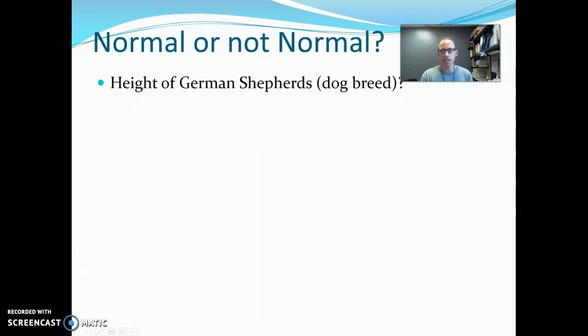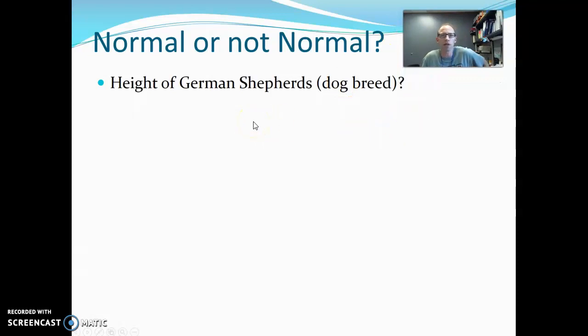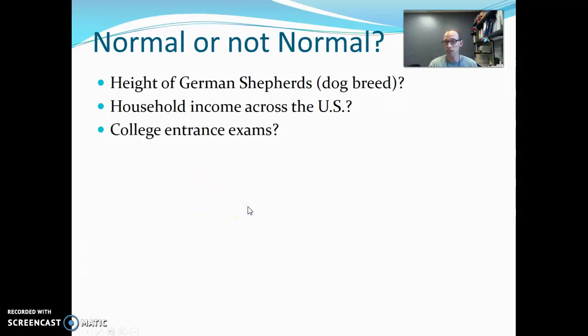Here's some various things. Let's try them out. What about dogs? Let's say you take a particular dog breed and then you measure the height and put them all in a histogram. Are those going to be normally distributed? Or what about household income? Each household, maybe this one makes $20,000, this one makes $25,000 a year, and we just plot those across the U.S. College entrance exams, we just looked at that. Hopefully you're saying yes, because they are standardized tests. When we say standardized, typically that refers to making it into some kind of normal distribution.